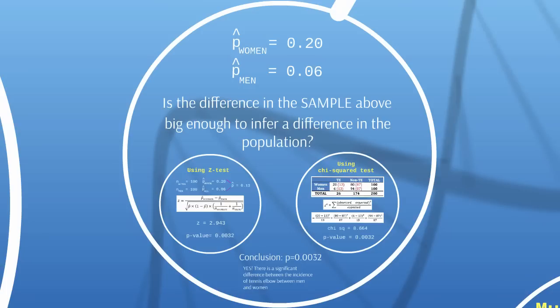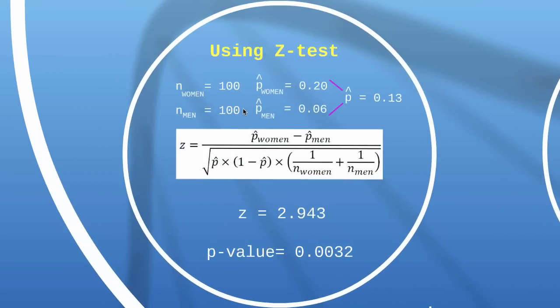The first is a z-test. We need the number of women in the sample (n_women = 100), the number of men (n_men = 100), the proportion of women developing tennis elbow (p̂_women = 0.20), the proportion of men (p̂_men = 0.06), and this sample-wide proportion (p̂ = 0.13). We can plug all this information into this formula, which essentially just assesses how big the difference is between women and men developing tennis elbow, and we get this z-score of 2.943.